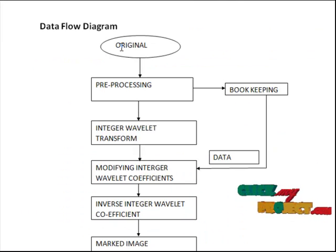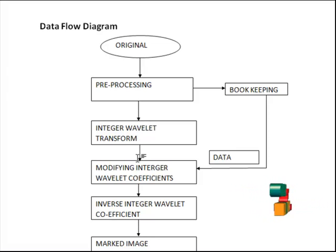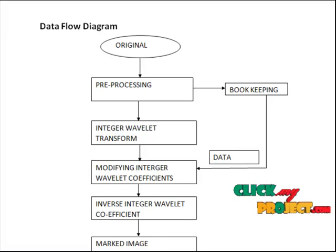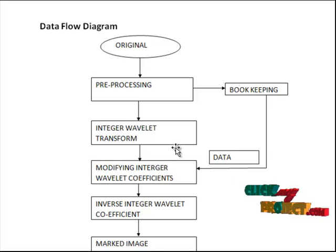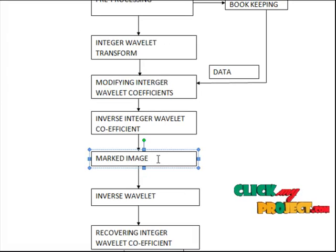This is the block diagram of our project. First, we load the original image and preprocess it to prevent overflow and underflow. We perform one-level integer wavelet transformation on the preprocessed image and calculate the difference of integer wavelet coefficients. Then we find the peak point in the difference integer wavelet coefficient histograms, modify the original integer wavelet coefficients according to the peak point, and embed the secret message and bookkeeping data. Finally, inverse integer wavelet transform is applied and the marked image is obtained.